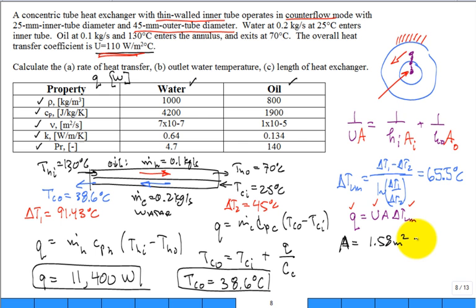And that area is made up of pi D L. Isn't that how we calculate it? Pi D L. So the length is the area divided by pi D. The length comes in at 20.2 meters. Look good?